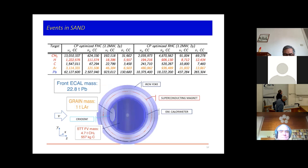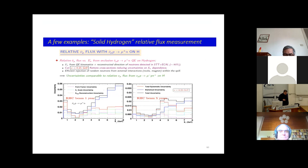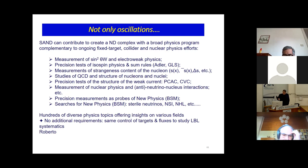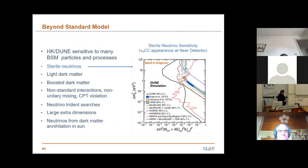The statistics we will get are striking: millions of neutrino events. For some of these things, there are only a few thousand events worldwide. This will allow us to make many measurements — not only for oscillation but also for general physics, including deep inelastic scattering with neutrinos, measuring sin-squared theta_W with neutrinos, and looking for dark photons and beyond-standard-model physics, because we have enormous statistics and a capable detector doing this while running the main program.